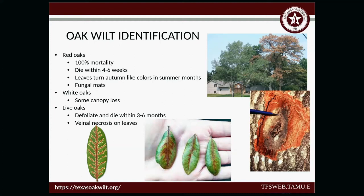That fungal mat is in the bottom right picture — that's what you would see. White oaks will show some canopy loss. Live oaks defoliate and die within about three to six months. What you'll see is vein scorch — that discoloration on the leaves. I actually have a couple of leaves here to pass around. You can see the pattern of oak wilt even on brown leaves. The outer part of the leaf will be light brown and the veins will be dark brown — you can still see that oak wilt pattern.